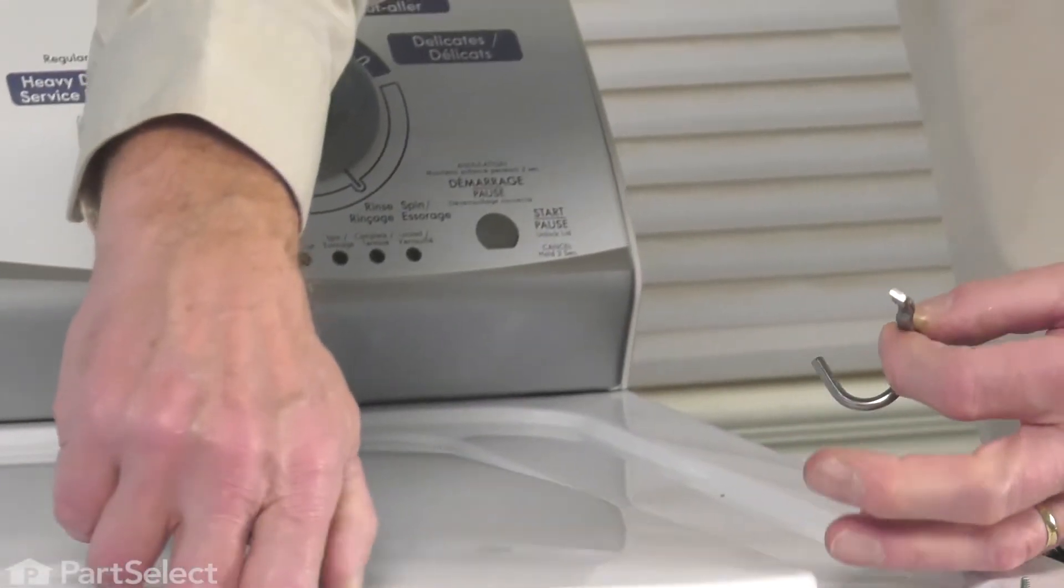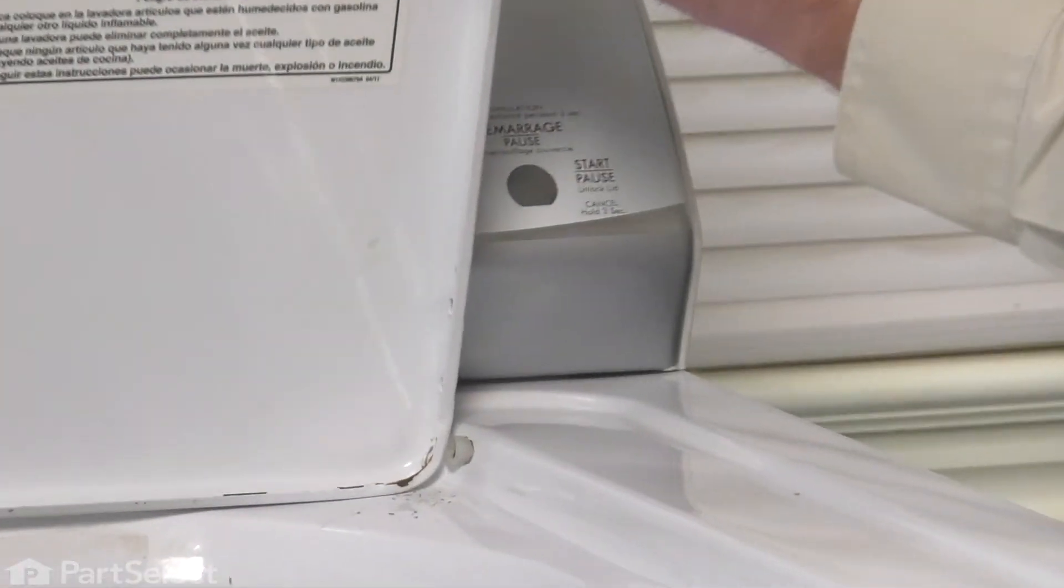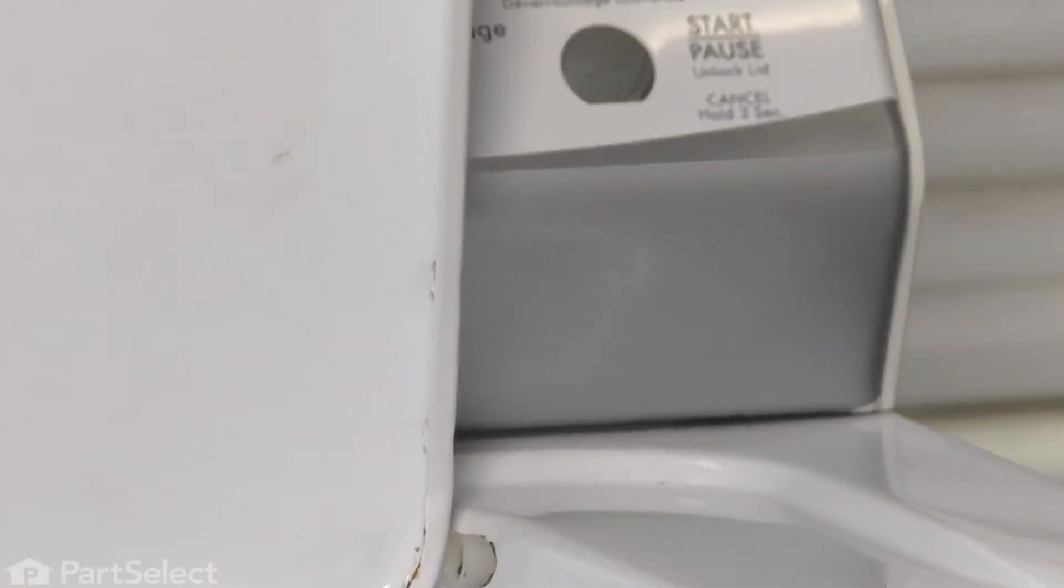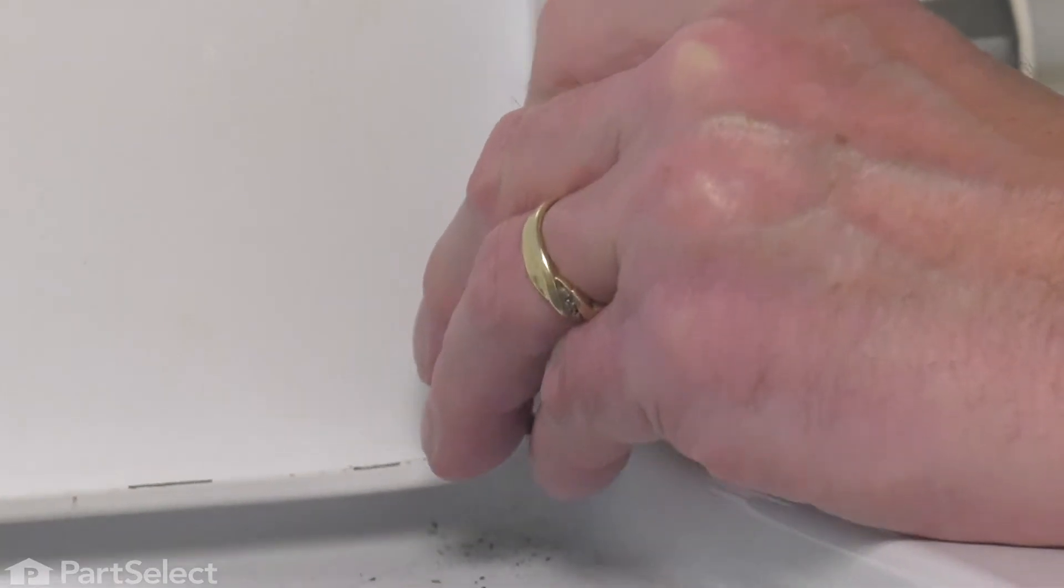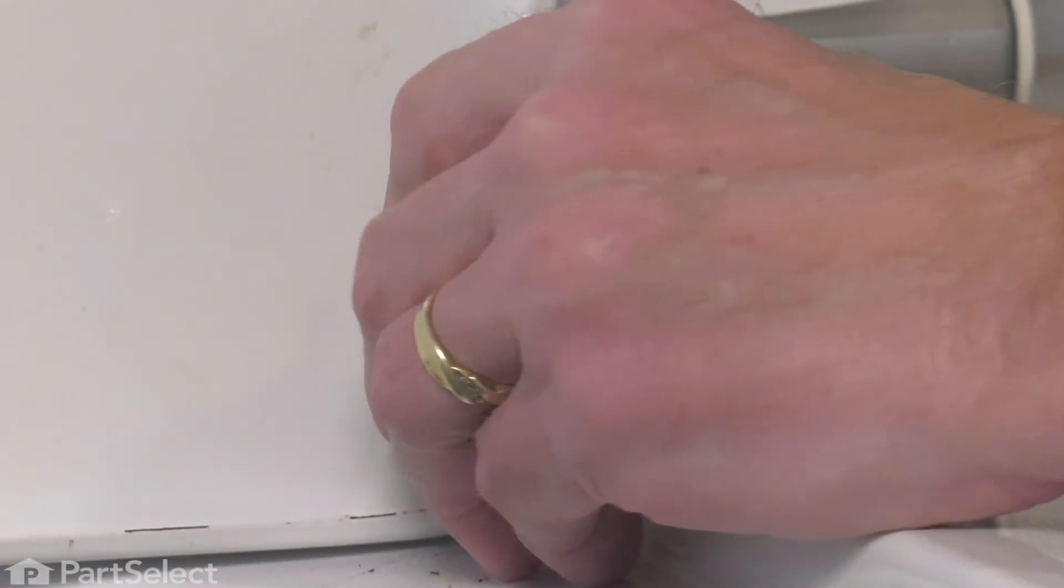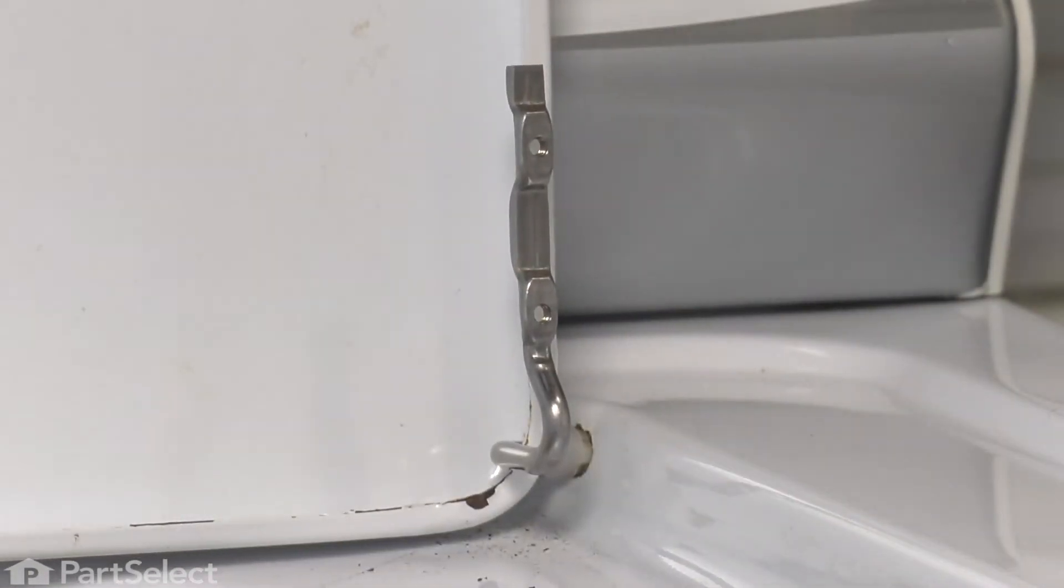We'll take the new hinge. We'll raise the lid again into the upright position. Then we'll insert the end of that hook through the opening in the lid first, then into that nylon bushing.